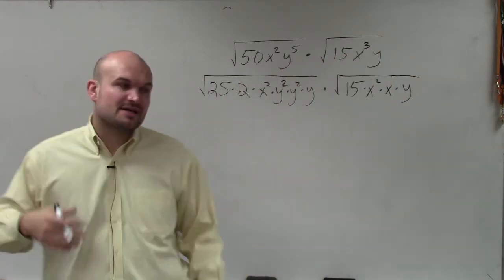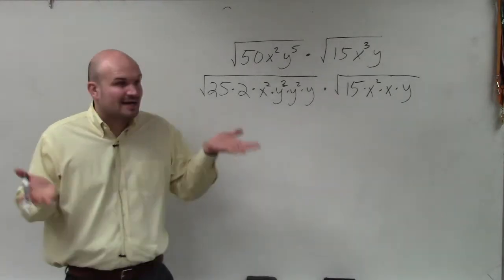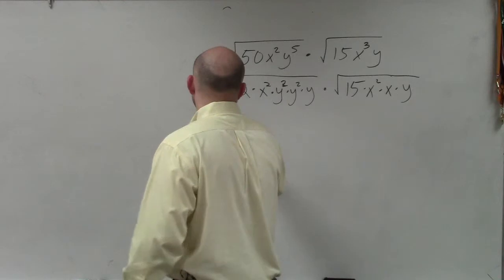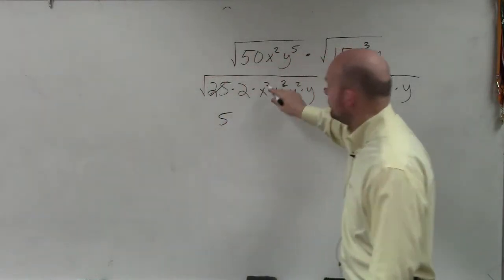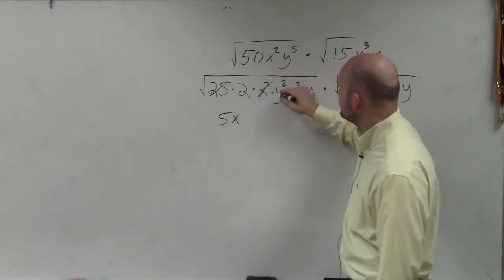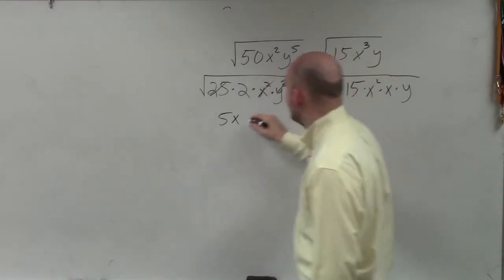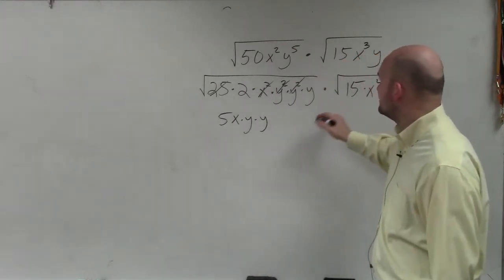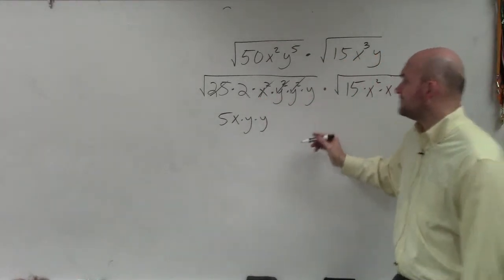So again, the reason why I did this is because I know I've now written it as terms I know I can take the square root of. The square root of 25 is 5. The square root of x squared is x. The square root of y squared is y. y squared is y. So I have y times y.